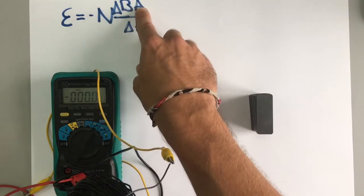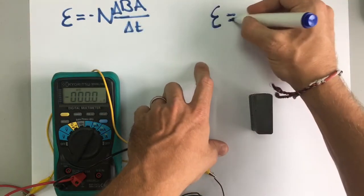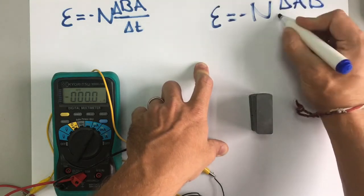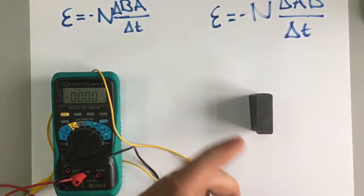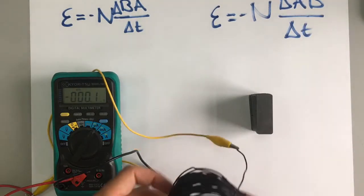The second way is to change the area. We can change the area and that slightly changes our equation to this. Still the same equation, but instead of changing the magnetic field, we're now changing the area.